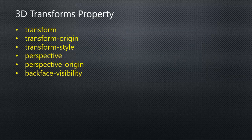3D Transform properties: Transform applies 3D transformation to an element. Transform-origin allows you to change the position and transform elements. Transform-style specifies how nested elements are rendered in 3D. Perspective specifies how 3D elements are viewed. Perspective-origin specifies the bottom position of 3D elements. Backface-visibility defines whether or not an element should be visible when not facing the screen.